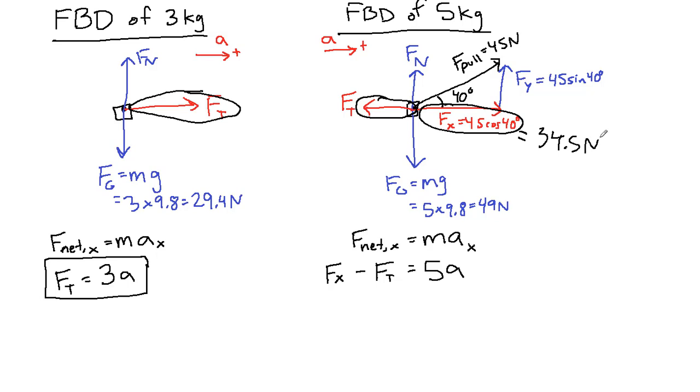So we have 34.5 minus our tension equals 5a. This is a second equation that has the same two unknowns. So this is our system of equations.